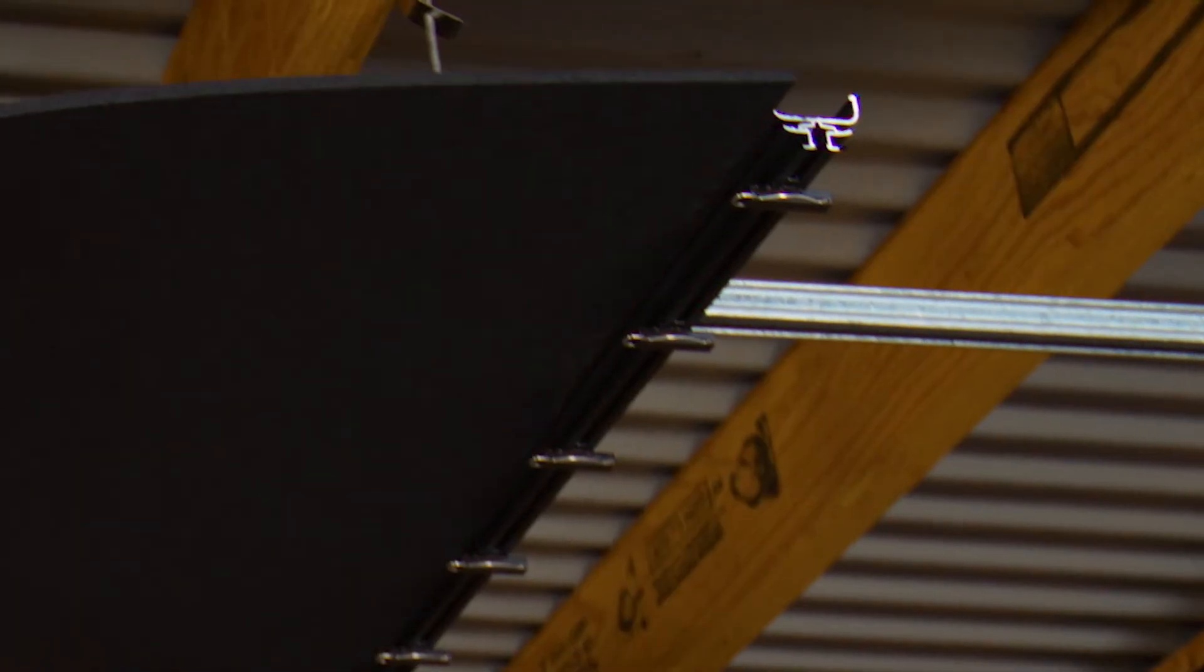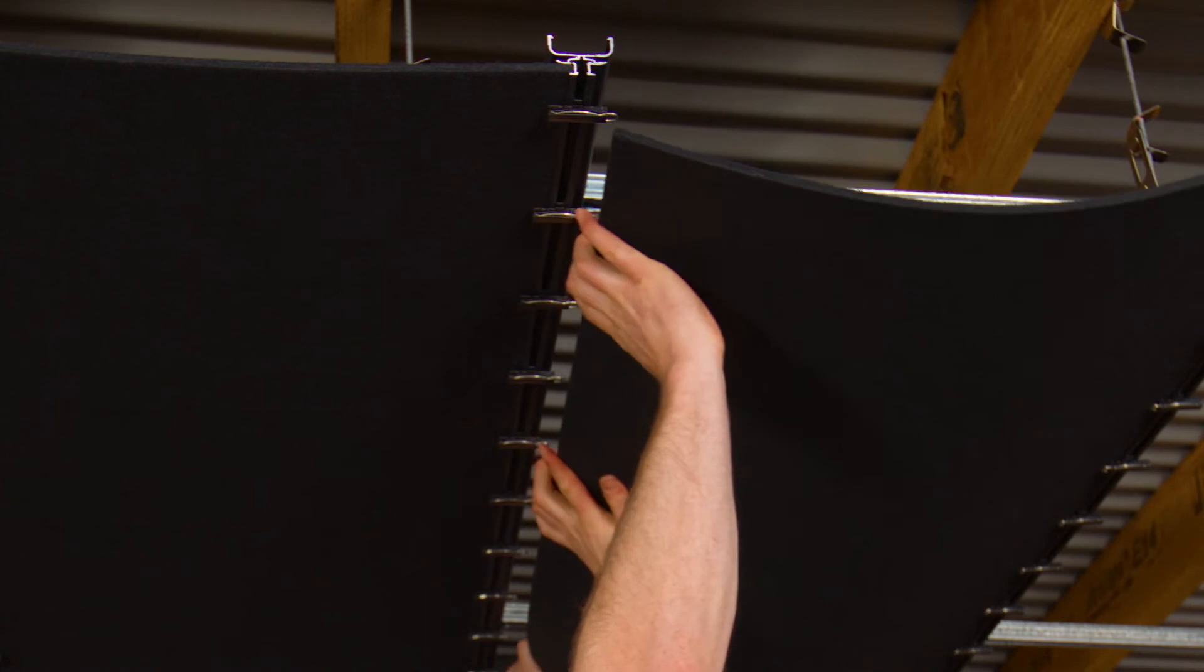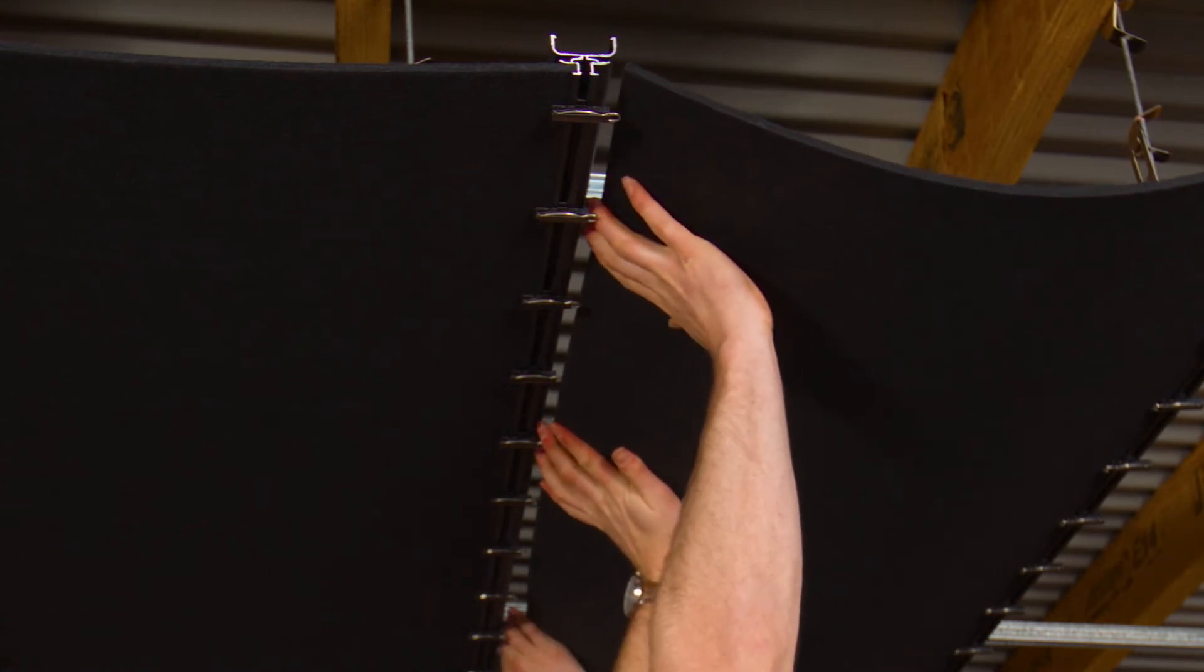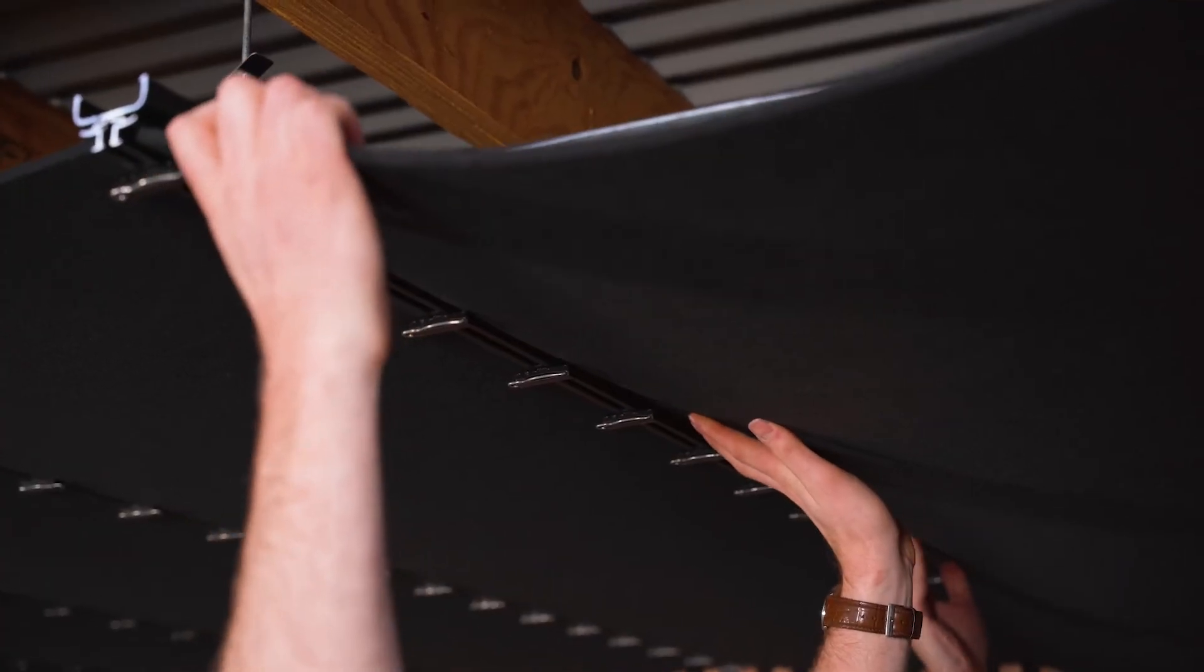Fit the acoustic backing by first inserting one edge into the specifically designed groove in the track, then bend it slightly to fit it into the other track's groove. If you need to use a tool to help guide the backing into place, ensure you don't mark the visible face of the backing.